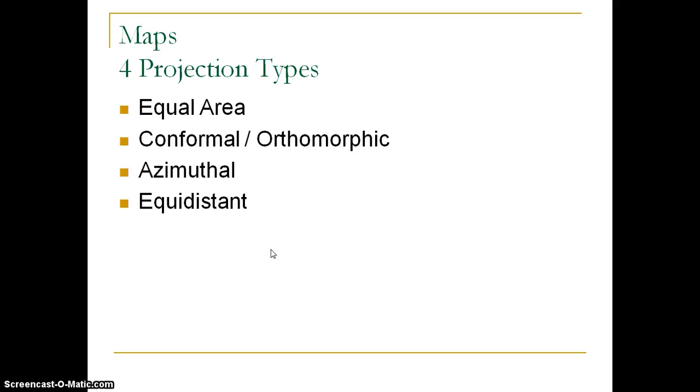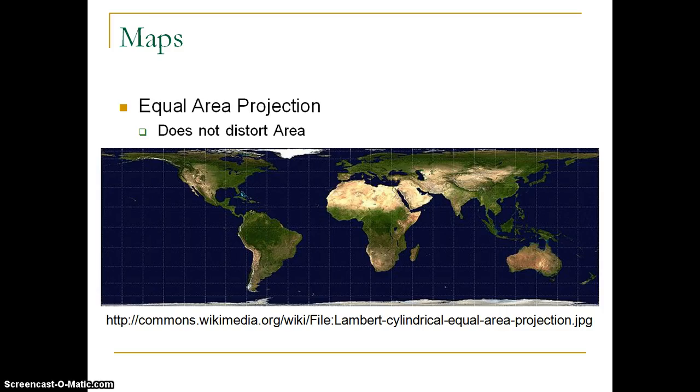When we talk about map projections and the different properties of maps, these first couple of maps we're going to look at really just try to purely maintain one of the different properties of the maps. You're not going to see a whole lot of these by themselves because of the way that they really try to maintain one of the specific properties. We have equal area, conformal or orthomorphic, azimuthal, and equidistant. So let's go through each of these.